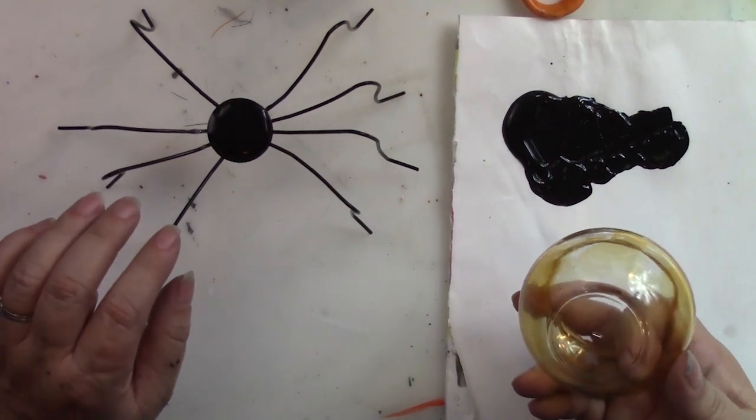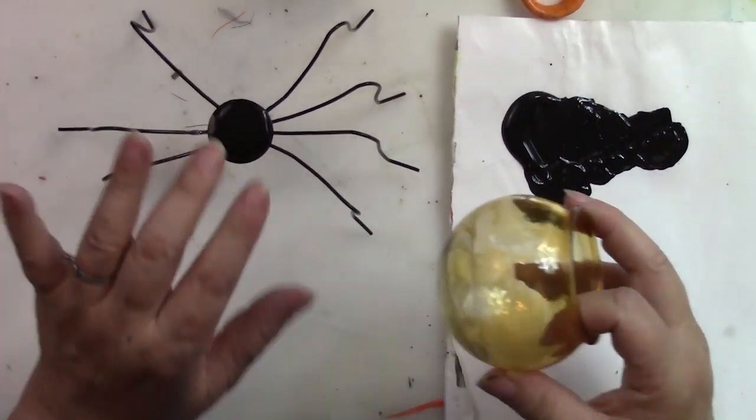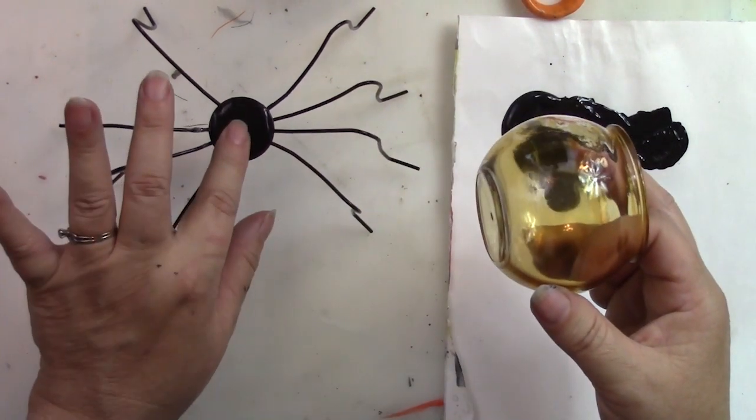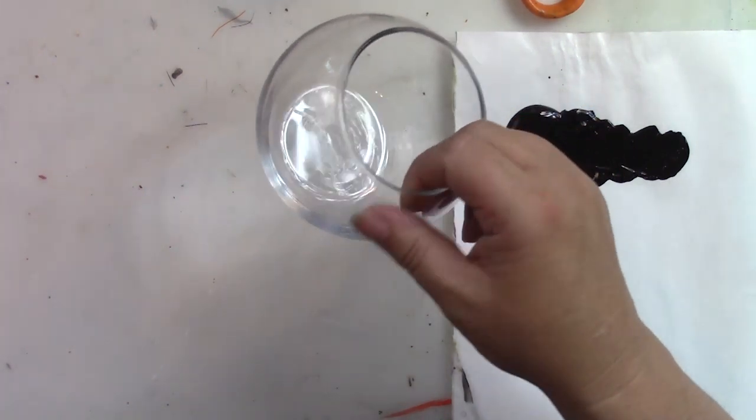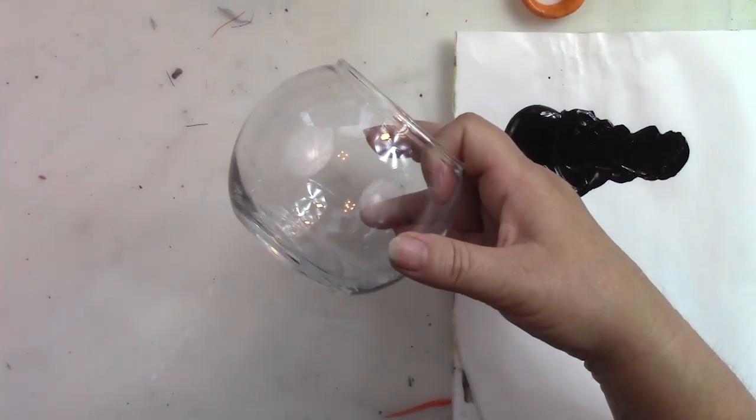I could have tried using my heat gun to loosen it, but I was afraid I would crack the glass so that's why I put it in hot water. Now they have two different sized bowls at Dollar Tree. This is the smaller of the two.